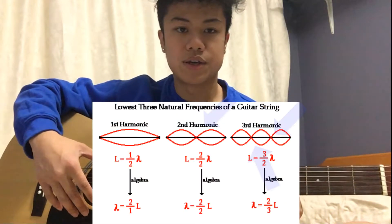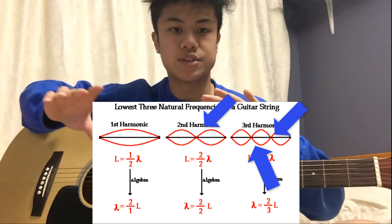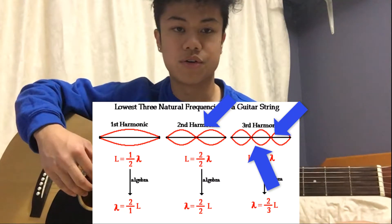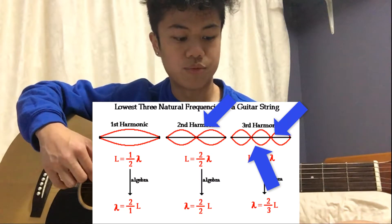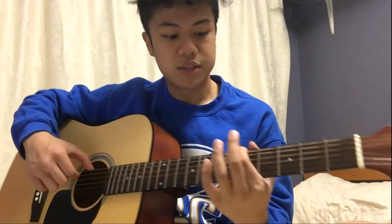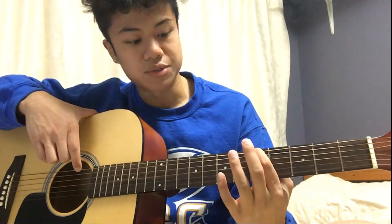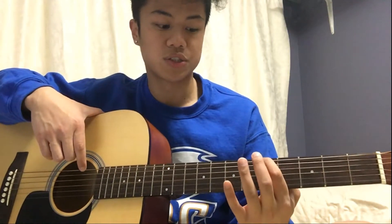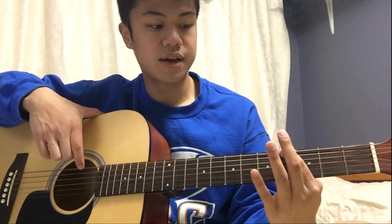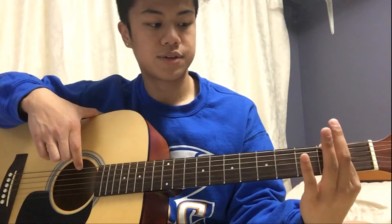Now referring back to the figure, you'll see points where the wave is not moving. These points are called nodes. Essentially when you place a finger down on the string, this point where you place your finger, the string will not vibrate, but the rest of it will. So essentially you're creating a node with your finger. And if you change the length of the string and where it's vibrating, you will change the wavelength. If you change the wavelength, you'll change the frequency. And if you change the frequency, you'll change the pitch. And that is why you can have different notes on a string.